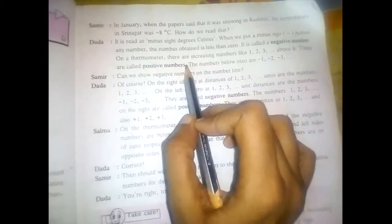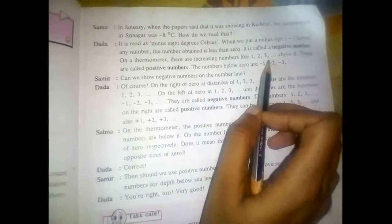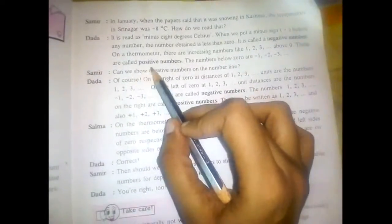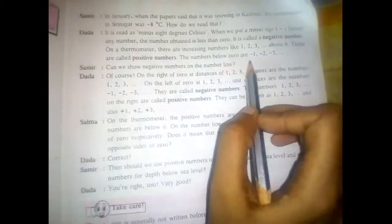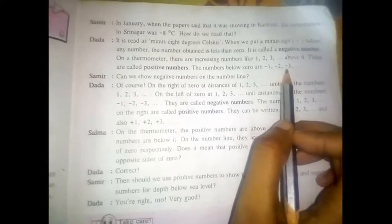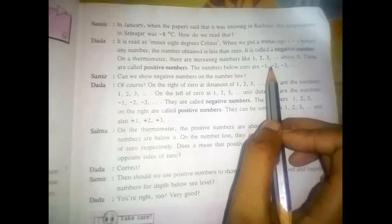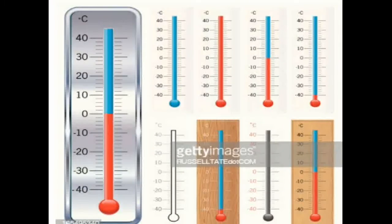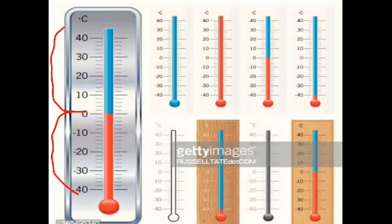On a thermometer there are increasing numbers like 1, 2, 3 above 0 — these are called positive numbers. The numbers below 0 are minus 1, minus 2 and minus 3. This is an image of a degree Celsius thermometer where numbers are vertically arranged. Numbers above 0 are all positive numbers — plus 10, plus 20, plus 30, plus 40. Numbers below 0 are all negative numbers — minus 10, minus 20, minus 30 and minus 40.